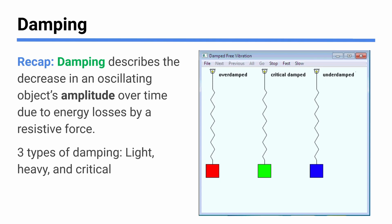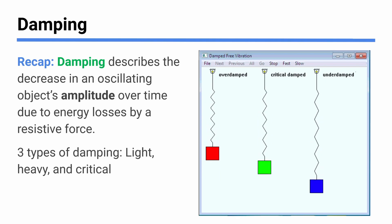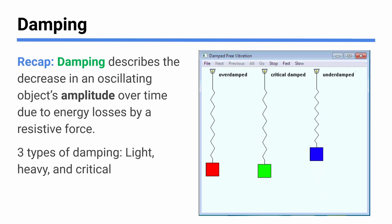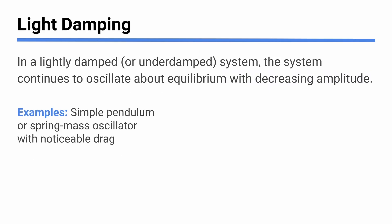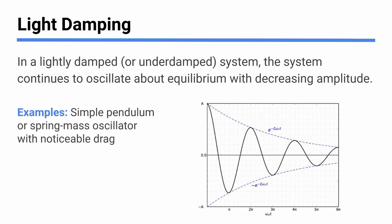The overdamped and critically damped cases are a little stranger than what you're used to. What we're used to is underdamped motion — something going up and down, getting smaller and smaller. These other two involve masses on springs with a bit more extreme damping. Light damping is the one you're probably most familiar with — something continues to do its oscillations, just with less and less amplitude. A simple pendulum or spring-mass oscillator going back and forth with smaller and smaller amplitude is a classic example of light damping. The IB isn't really going to get into the math of any of this — it's mostly a knowledge thing.